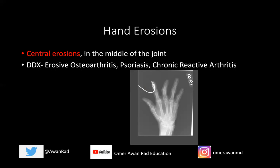Psoriasis and chronic reactive arthritis can have either central or marginal erosions. In summary: if it's juxta-articular — right outside the joint — think only gout. If it's a marginal erosion, the prototypical type is RA, but also consider psoriasis and chronic reactive arthritis. If it's a central erosion, the prototypical type is erosive OA, but again consider psoriasis and chronic reactive arthritis. Psoriasis and chronic reactive arthritis appear in two of the three categories — marginal and central — while gout is the only consideration for juxta-articular erosions.